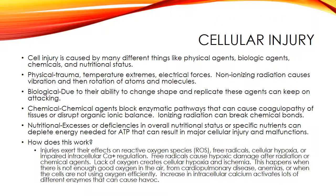Cell injury can be caused by many things including physical agents, chemicals, biologic agents, and nutritional factors. Physical agents include mechanical forces that produce tissue trauma, extremes of temperature, electricity, radiation burns, and nutritional disorders. Chemical agents can cause cell injury by blocking enzymatic pathways, causing coagulation of tissues, or disrupting the osmotic or ionic balance of the cell. Biologic agents differ from other injurious agents because they are able to replicate and continue producing injury. Among nutritional factors, we have excesses and deficiencies of nutrients, vitamins, and minerals — B12 was an example.